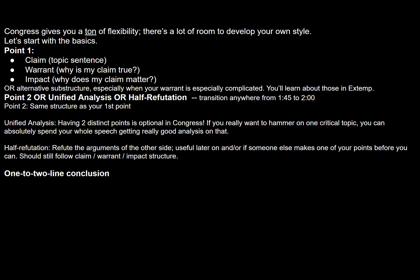Alternatively, if one of your points becomes useless later on in the round — for example, if somebody else gives it and now it would be redundant — you can do something called a half refutation. This is basically where you drop one of your points and spend that time instead refuting the arguments of the other side. You still want this to follow claim, warrant, and impact, but instead of talking about your own arguments, you're saying 'Representative X said blah blah blah, but here's why they're wrong.' You want to target an important impact given by somebody you think is winning the round right now, and then try to break that down.